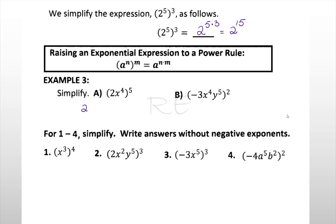For part a, we distribute the exponent 5 to each factor: 2 to the first gives 2 to the 1 times 5, and x to the fourth gives x to the 4 times 5. We get 2 to the fifth times x to the 20th. And 2 to the fifth is 2 times 2 times 2, five times, which is 32. Therefore, the expression becomes 32x to the 20th when simplified.